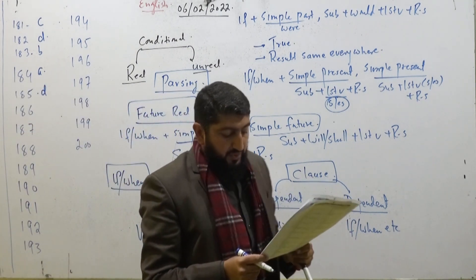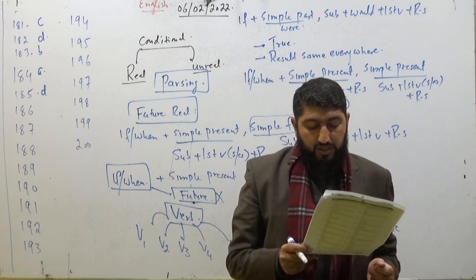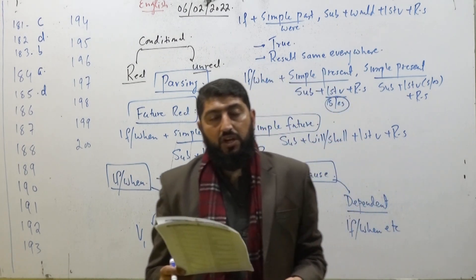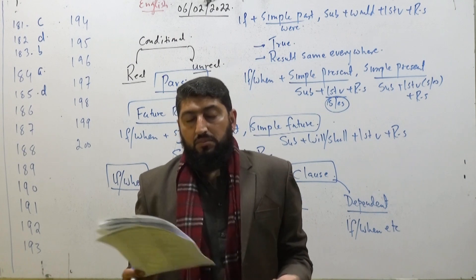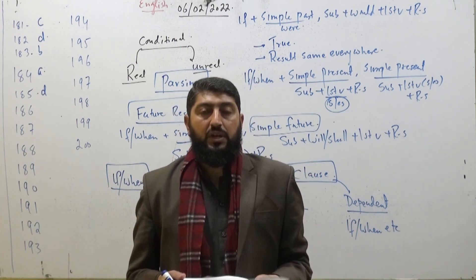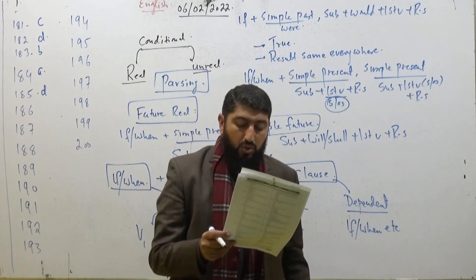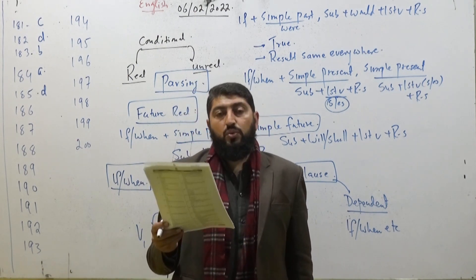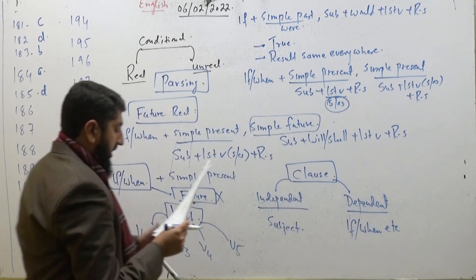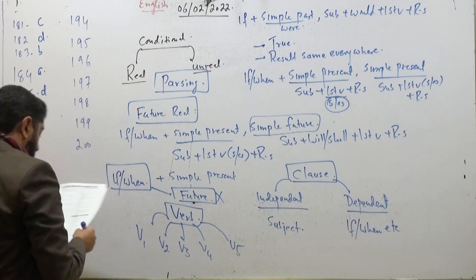'If a ghost appeared, dash.' Again this is an unreal structure. It hasn't appeared yet — if it appeared, all the students would flee. So option number B is the correct one.